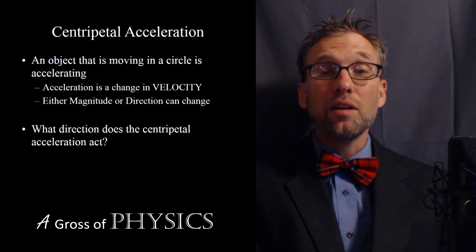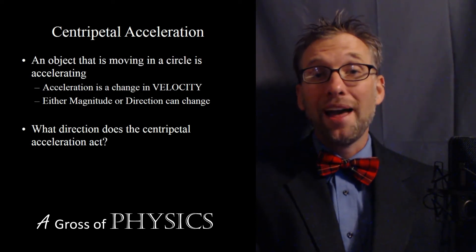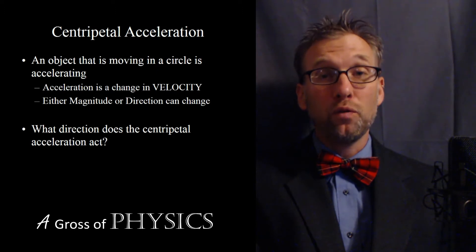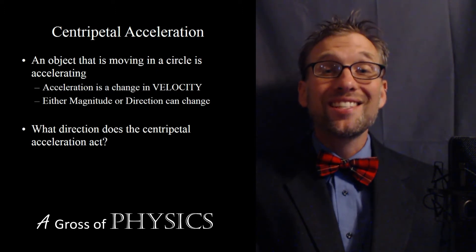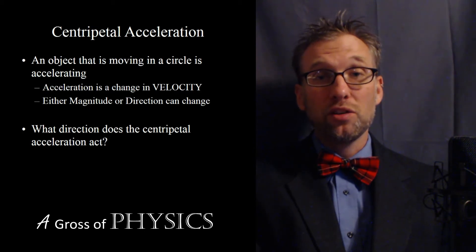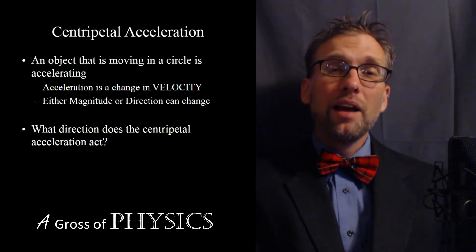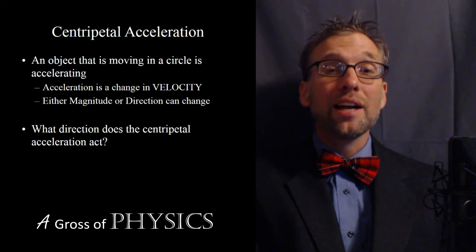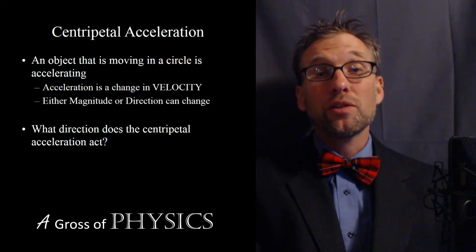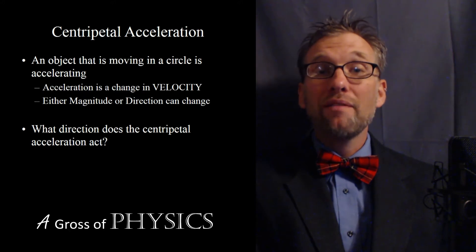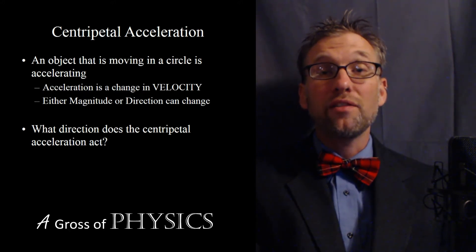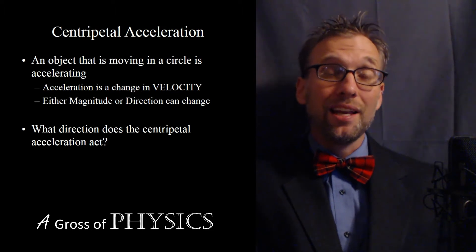The car itself was traveling in a circular path, and that circular path was due to the centripetal force pushing towards the center of the circle. In fact, in this case, friction would be the centripetal force. The centripetal acceleration always acts towards the center of a circle, and the word centripetal means center-seeking. So when we have a centripetal acceleration, it's an acceleration that seeks the center of the circle.